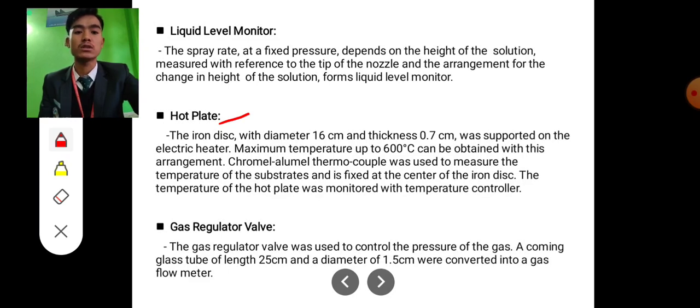Gas regulator valve: the gas regulator valve was used to control the pressure of the gas coming. A gas tip of length 35 centimeter and diameter 1.5 centimeter were converted into a gas flow meter.